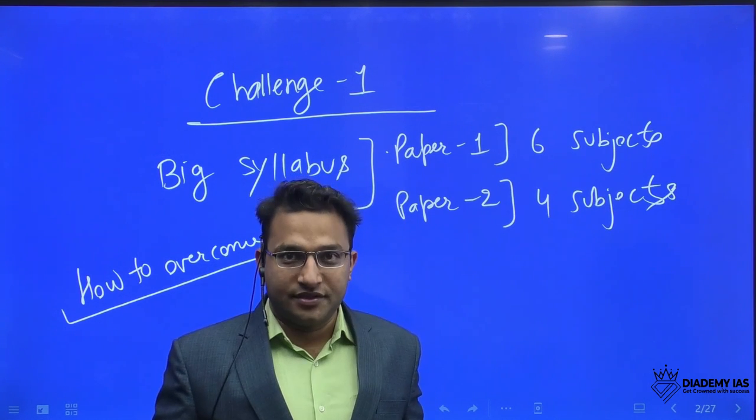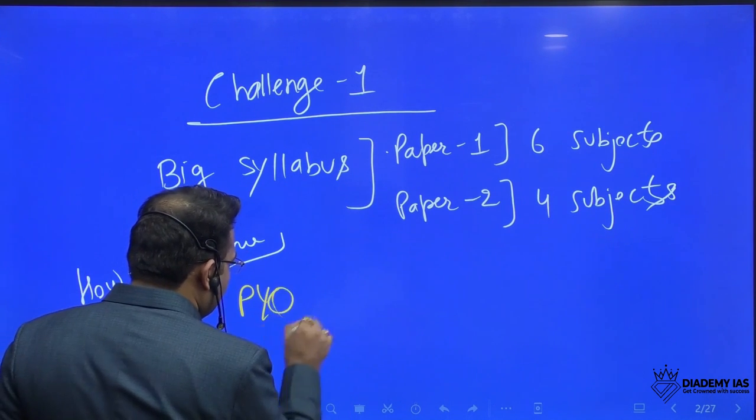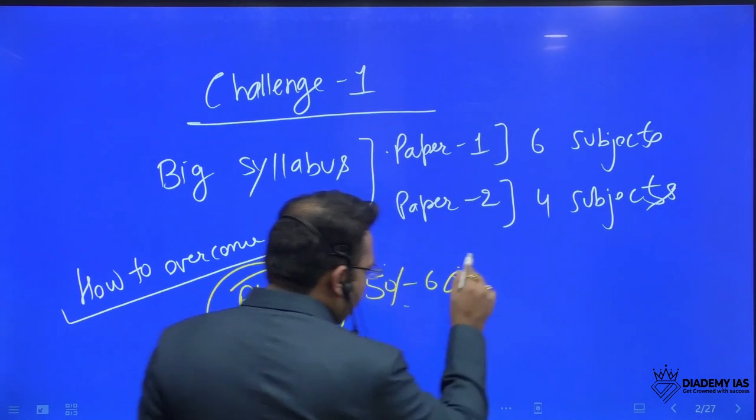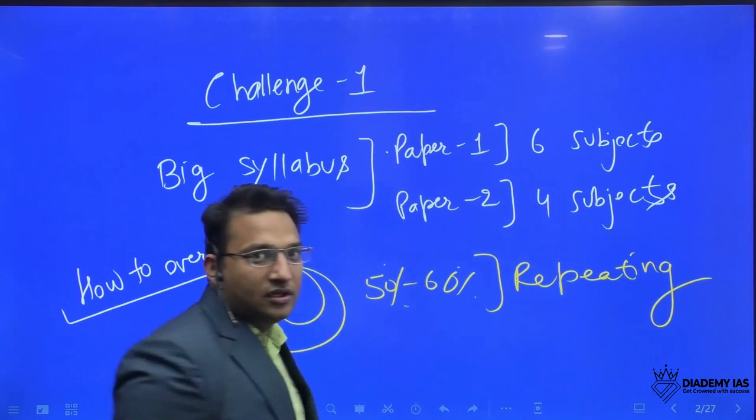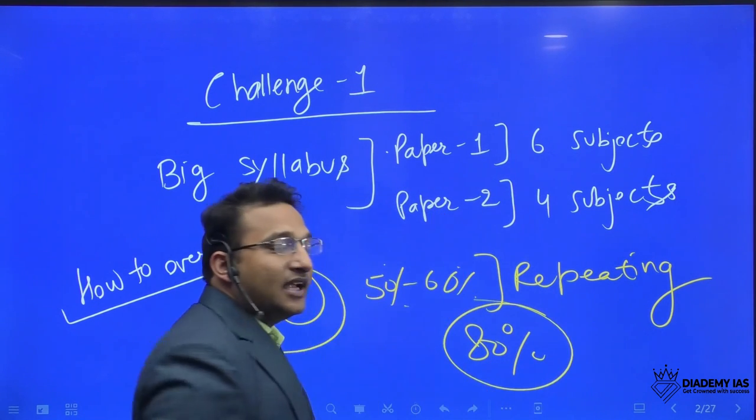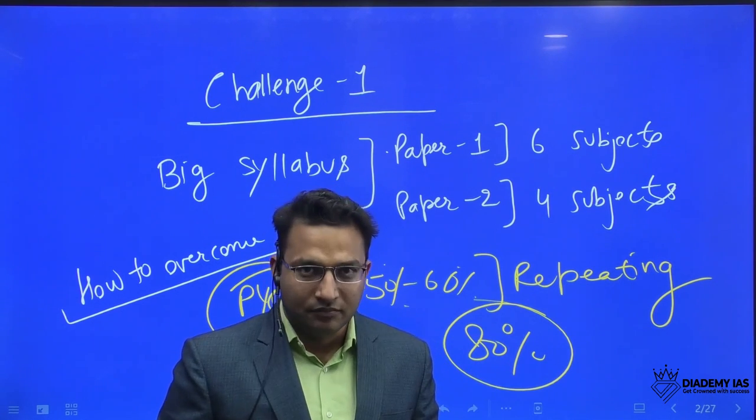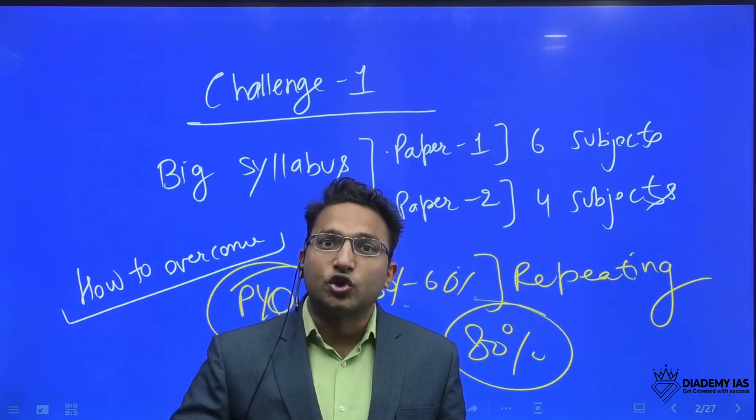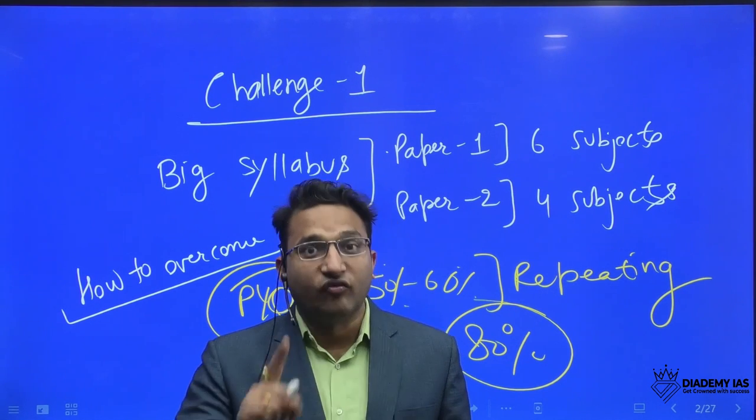Now, how to overcome this? If we see the previous question pattern, 50% to 60% questions are repeating. So in these questions, you have to do the mastering. You have to score 80%. And through this only, you can get maximum marks. Do not leave anything. You have to score average marks in everything, minimum. But in this 50% to 60%, you have to focus more. So previous question should be the best possible answer in your copies. This is one way.